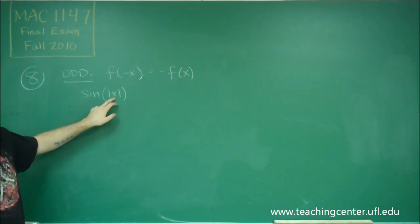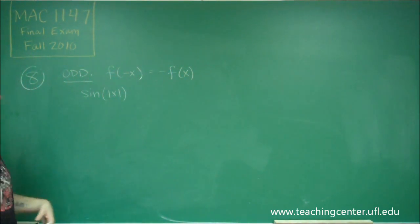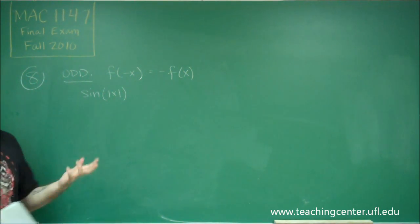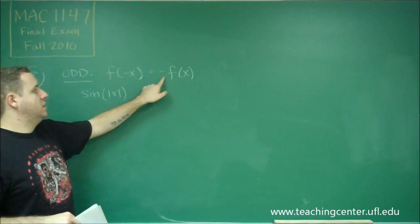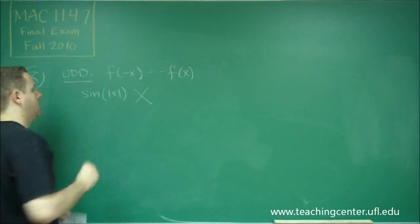Well, if we plug in minus x instead of x, the absolute value makes it the same thing as it was before and we get the exact same function back. We don't get the opposite of the function, so this is not odd.